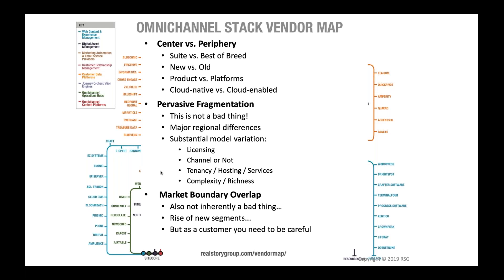We see pervasive fragmentation, meaning lots of stops on each metro line — that's not a bad thing, it means you have lots of choices. Technology marketplaces tend to lose innovation under monopoly or oligopoly. There are also major regional differences with vendors more or less focused on EMEA, Asia-Pacific, or North America, substantial model variations in licensing and hosting, and a complexity spectrum that is often a really good way to understand these markets.